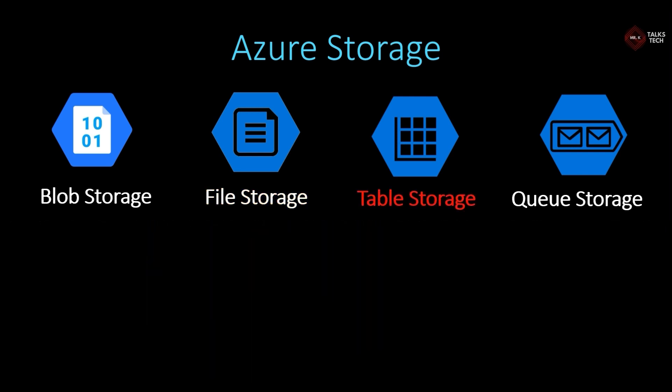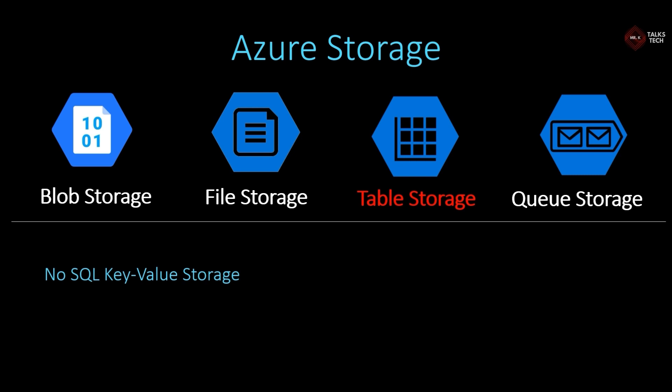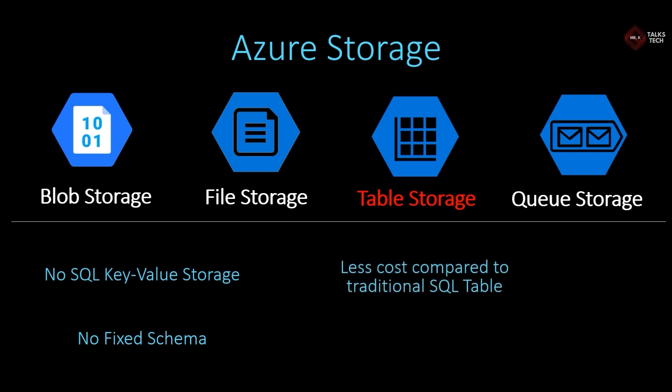The next storage is table storage. It is a NoSQL key-value storage. NoSQL means it doesn't follow a fixed schema. Traditional database tables follow a fixed schema — if you create a table with three columns, you insert rows with exactly three values. With NoSQL table storage, you store data in key-value format with no fixed schema, so you can store three, four, or five values. It is also lower cost than traditional SQL tables and has high access speed.